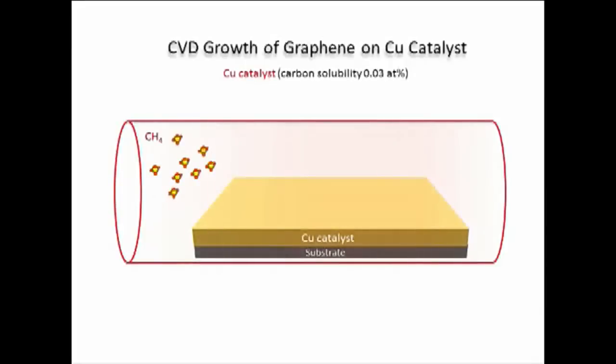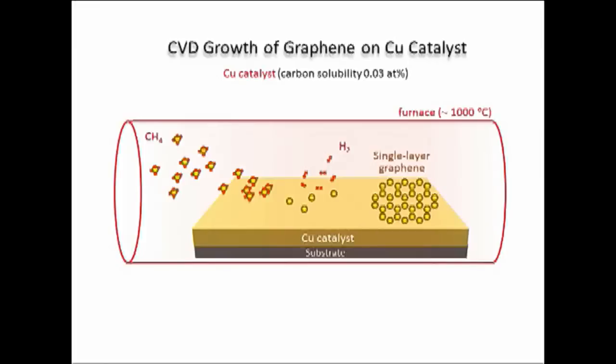In the CVD, copper is now widely used as a catalyst because it assists the growth of uniform single layer graphene. Methane molecules supplied at high temperatures are decomposed on the copper surface, then diffuse and form single layer graphene.